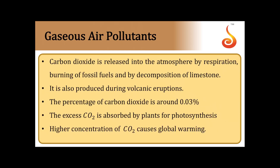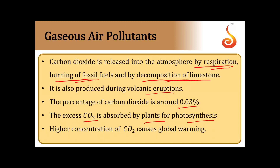Carbon dioxide is released into the atmosphere by respiration, burning of fossil fuels, decomposition of limestone, and volcanic eruptions. The normal percentage of CO2 in the atmosphere is about 0.03%, and excess CO2 is absorbed by plants for photosynthesis. However, CO2 concentration above 0.03% causes global warming.